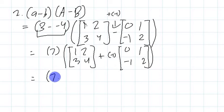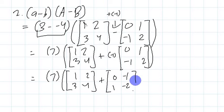Therefore, I'm going to have the scalar 7 outside multiplied to the matrix 1, 2, 3, 4, plus 0, negative 1, 1, negative 2.